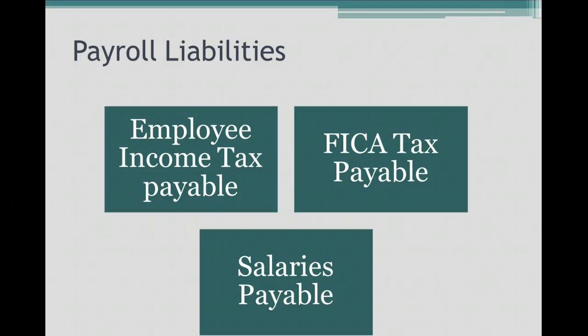The next category, FICA taxes payable, is also withheld from your paycheck. FICA taxes payable represents your Medicare and Social Security taxes. Those are also withheld from your paycheck and remitted to the IRS. Finally, salaries payable is the amount of the check that gets paid to the employee.